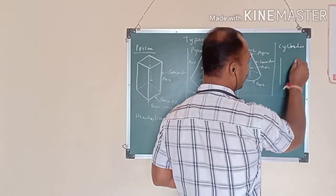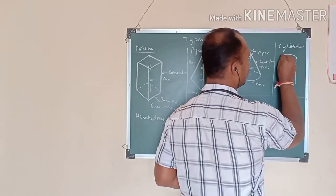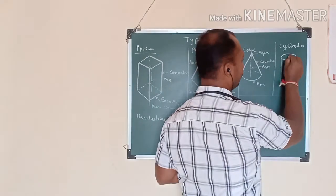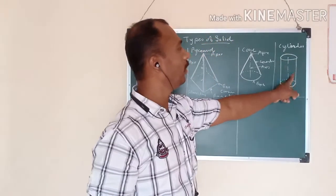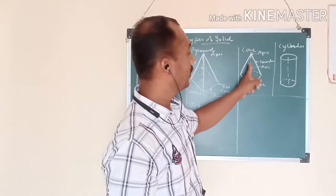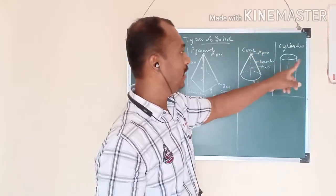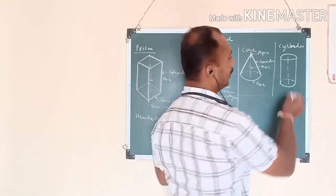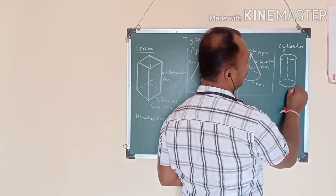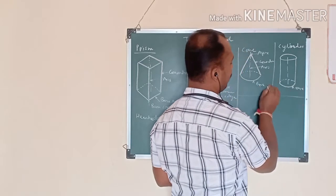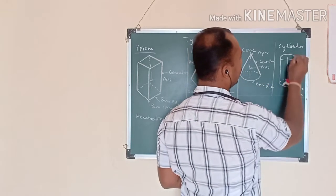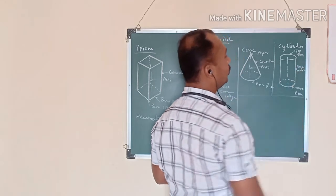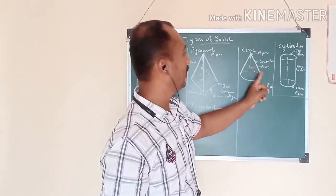The cylinder has both its base and top face as circles. This is the axis. The cylinder is also a solid of rotation — a rectangular plane is rotated about one of its length sides to get the cylinder. This is called the top face, this is the base, this is the base ring, and these are the generators. The cylinder also has an infinite number of generators.